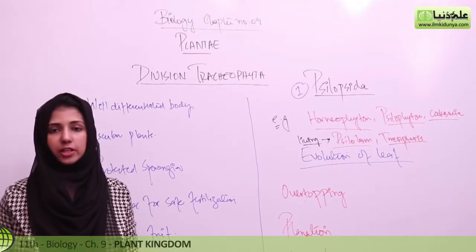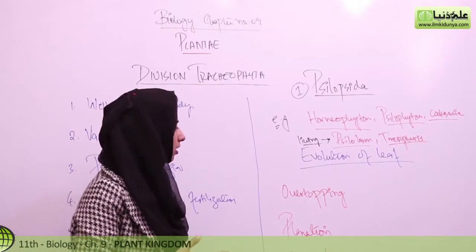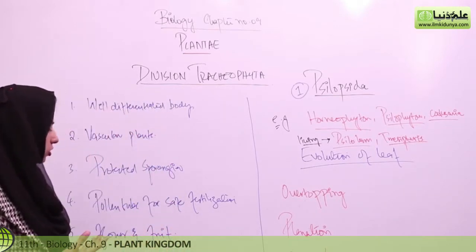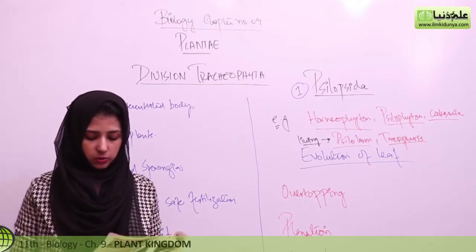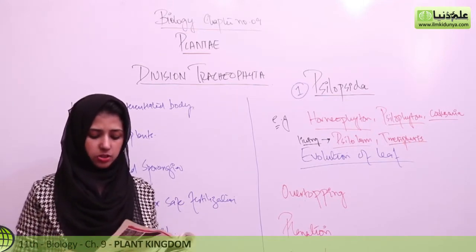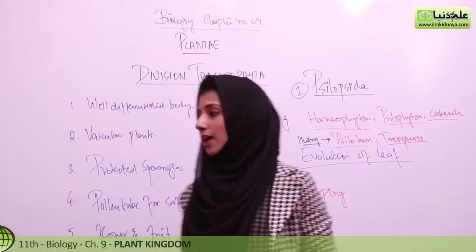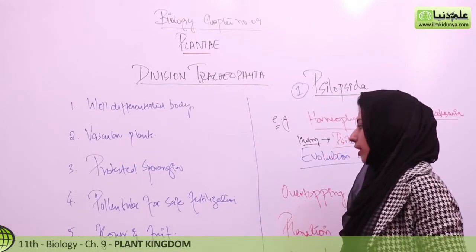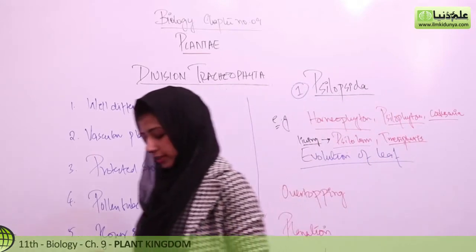The reproductive organs of the sporophyte are sporangia, which give rise to gametophytes. Vascular tissues are available but very narrow. They are central and solid without a pit, and there is a broad cortex.